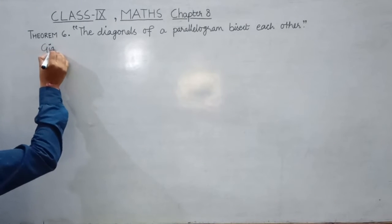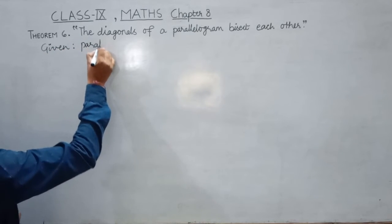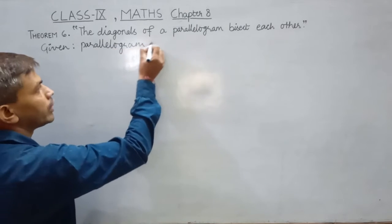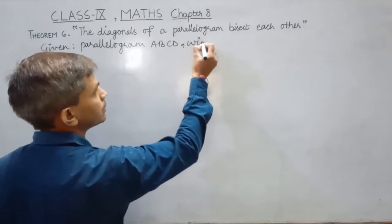So let's check what we are given. We are given a parallelogram ABCD with two of its diagonals